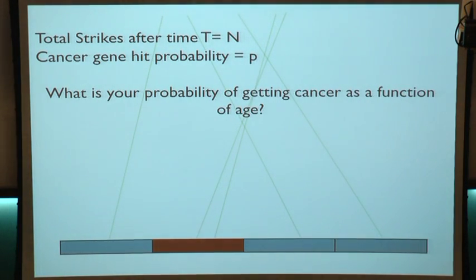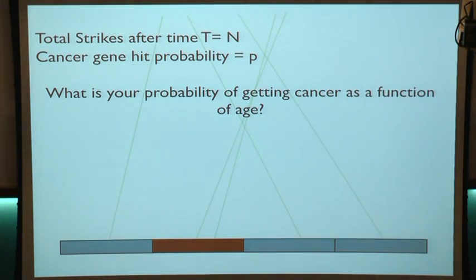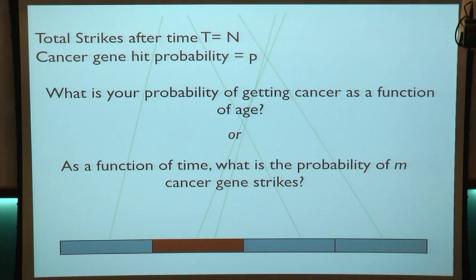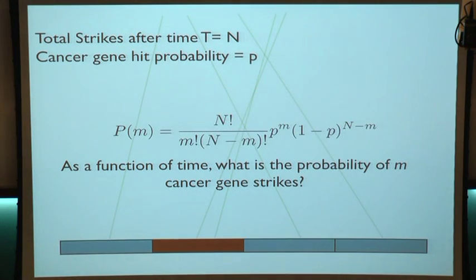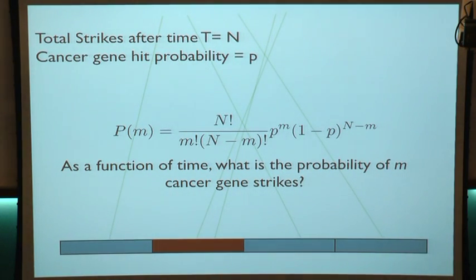After some amount of time T, we're going to have some number of genome strikes N. The human genome is about three times ten to the ninth base pairs long. Just from replication errors plus environmental factors we experience every day — UV rays, different kinds of chemicals — the number of strikes we experience to our genome is going to be quite large. The probability that one of these strikes hits the cancer gene is what I'm going to call P.